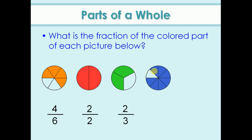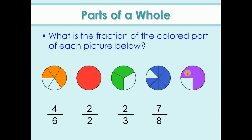In the next picture, total parts are eight and colored parts are seven, so the fraction is seven by eight. Then, total parts are four and colored parts are three, so the fraction is three by four.